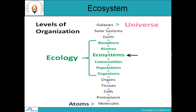Regarding levels of organization: the smallest structural and functional unit of matter is atoms. Atoms combine to form molecules; molecules combine to form protoplasm and cells. A cell is the smallest structural and functional unit of life. Many cells combine to form a tissue; tissues combine to form organs. Different organs — kidney, liver, heart — together make a complete human being, a complete organism, a living being.